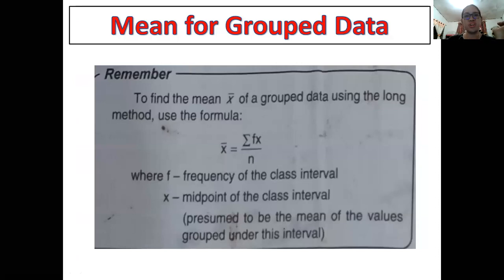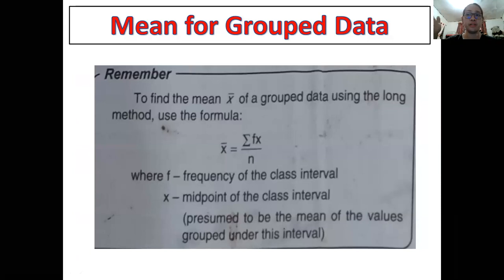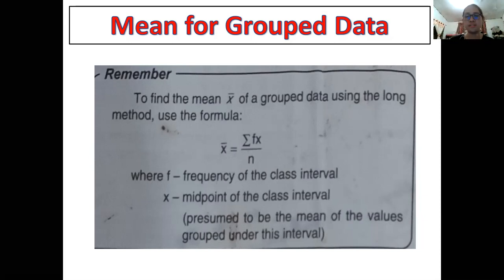Now we will be focusing on grouped data. The difference between grouped and ungrouped: you can use the formula for measures of central tendency for grouped data when the number of data is more than 25. If it's less than 25, you can still compute the mean, median, and mode using regular methods. But if it's more than 25, it's appropriate to group the data. In this case, I have already grouped the data and provided the frequency distribution table.